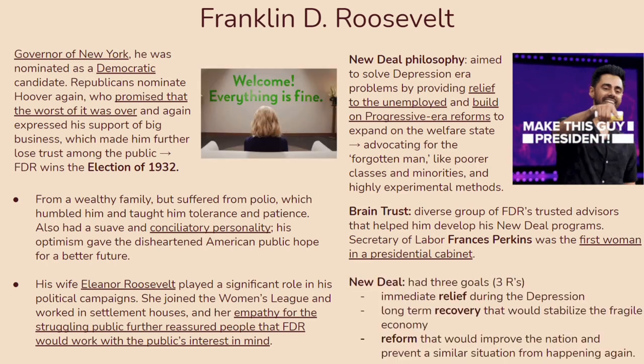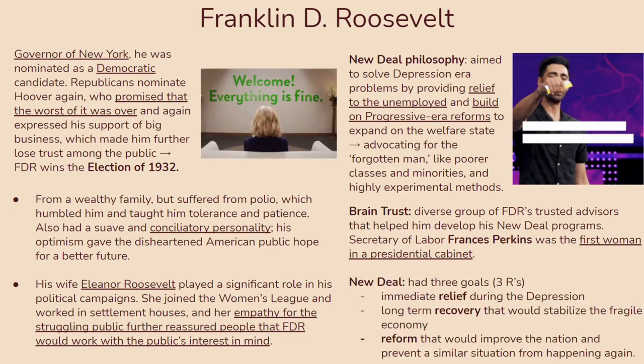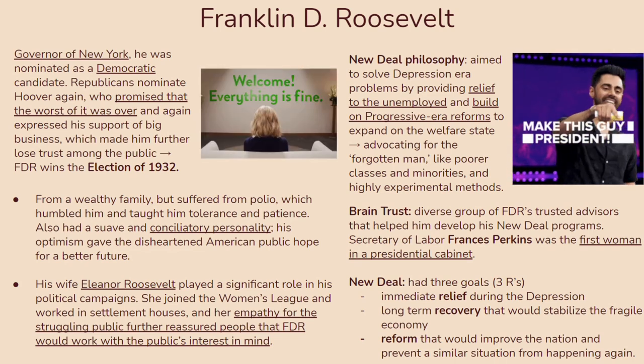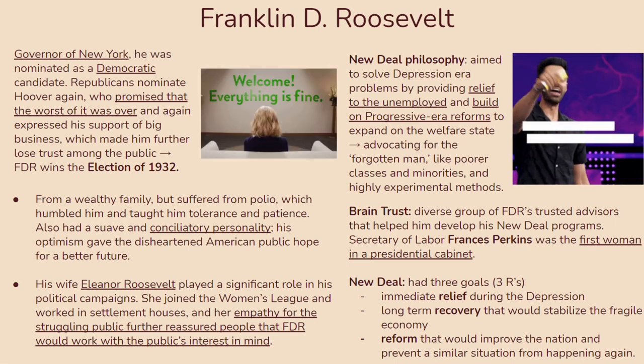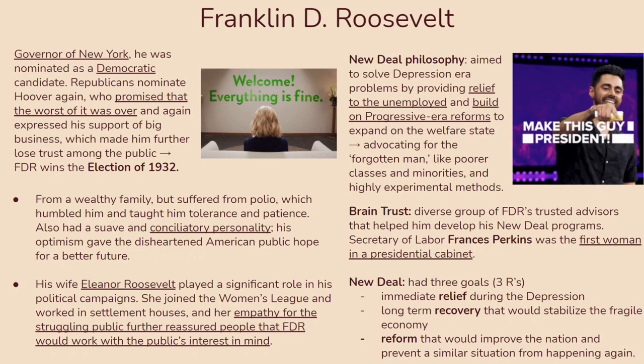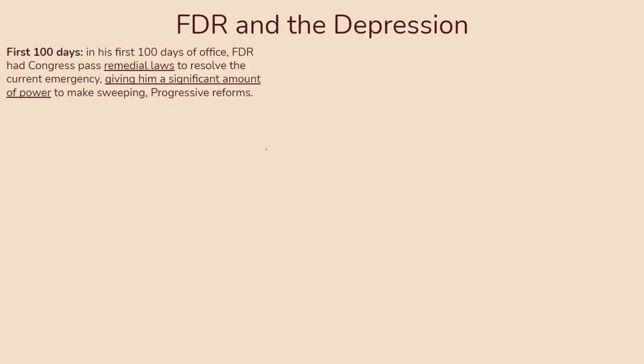The New Deal had three goals, known as the three R's: immediate relief during the Depression, long-term recovery that would stabilize the fragile economy, and reform that would improve the nation and prevent a similar situation from happening again. FDR starts with his first 100 days in office, where Congress passes a bunch of remedial laws to resolve the current emergency, giving him a significant amount of power to make sweeping progressive reforms. The country was placing a lot of power and faith in FDR's abilities, which, as we'll see later, would be seen as problematic among some people.